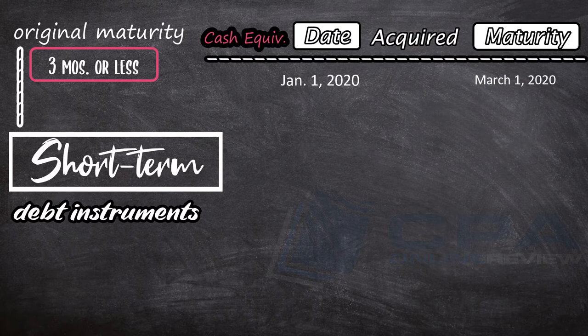Also, it was acquired on January 1, 2020. Comparing acquisition and maturity dates, the instrument was acquired 3 months from maturity. This is a cash equivalent.